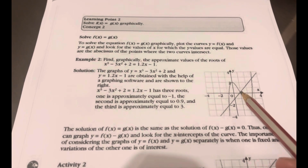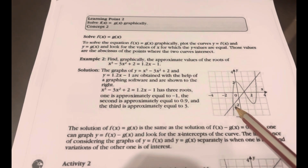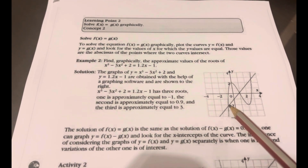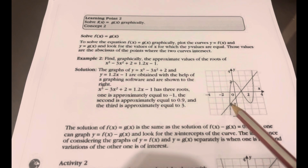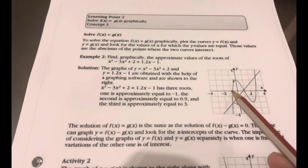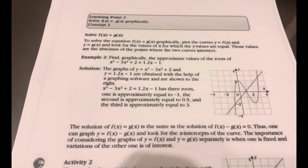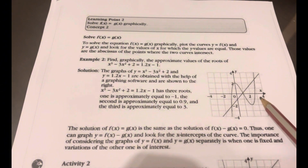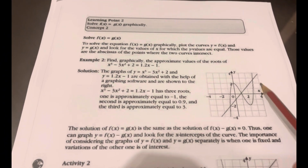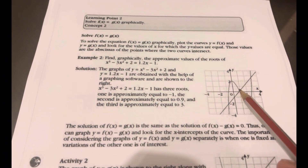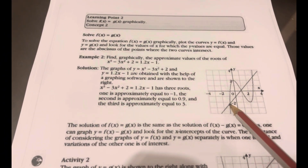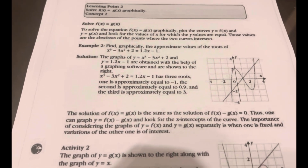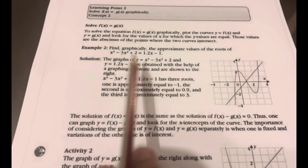The intersections are approximately x equals 1, x equals minus 0.9, and x equals 3. So you have three intersections, and these three intersection points are your solution for these two equations.